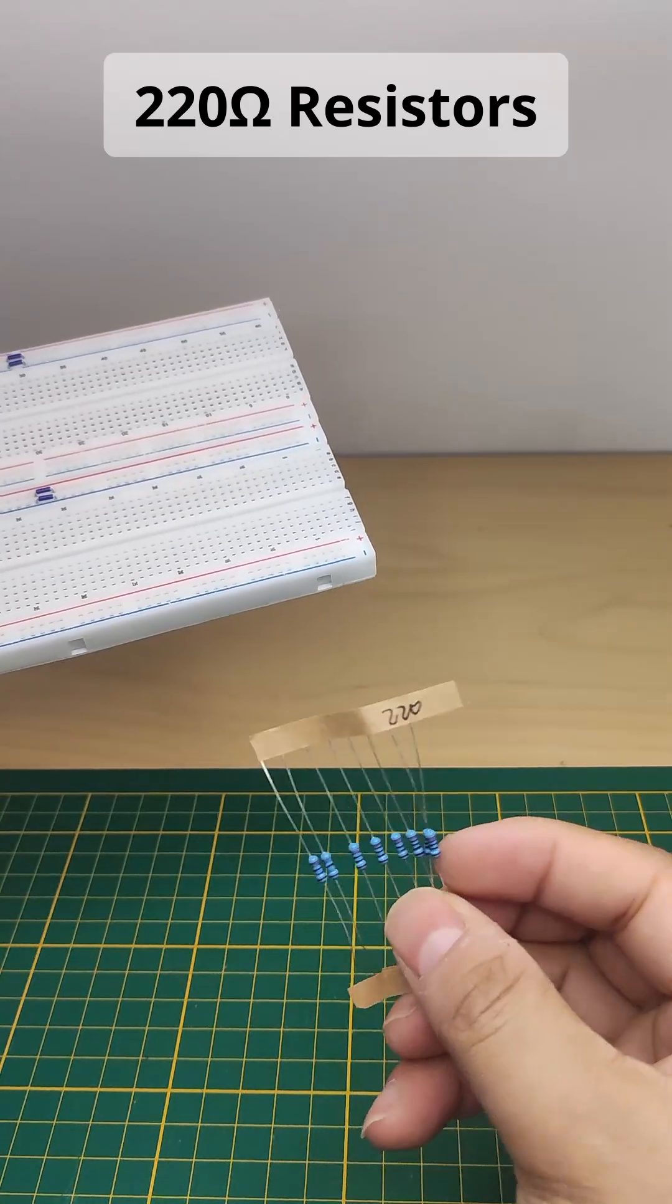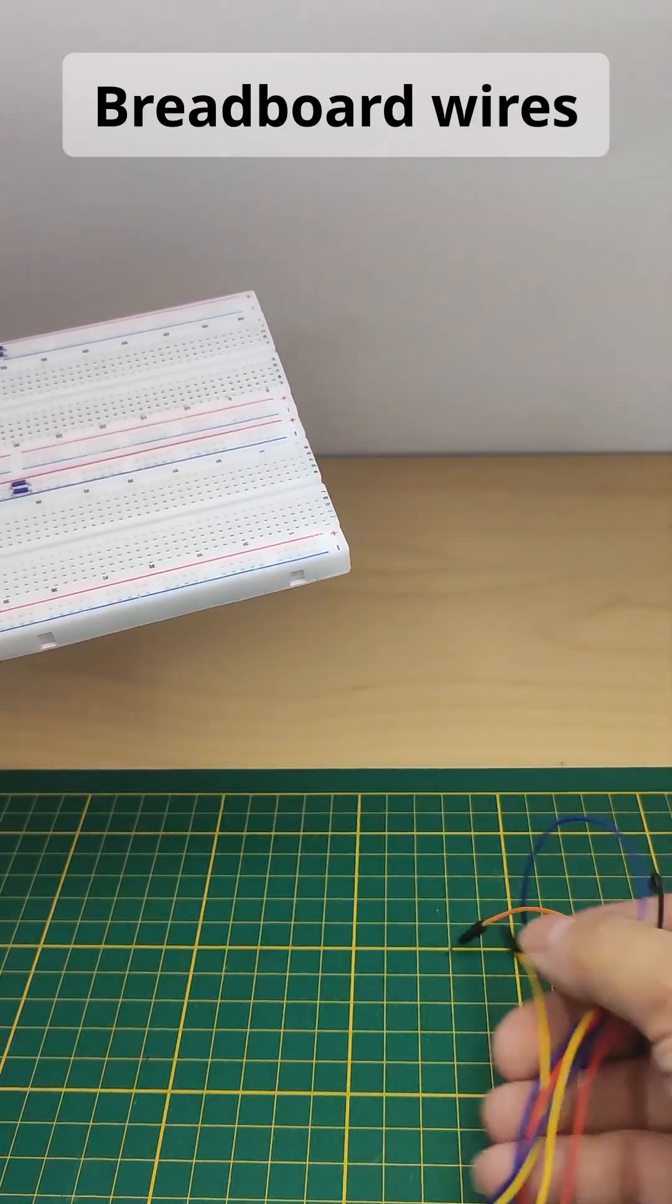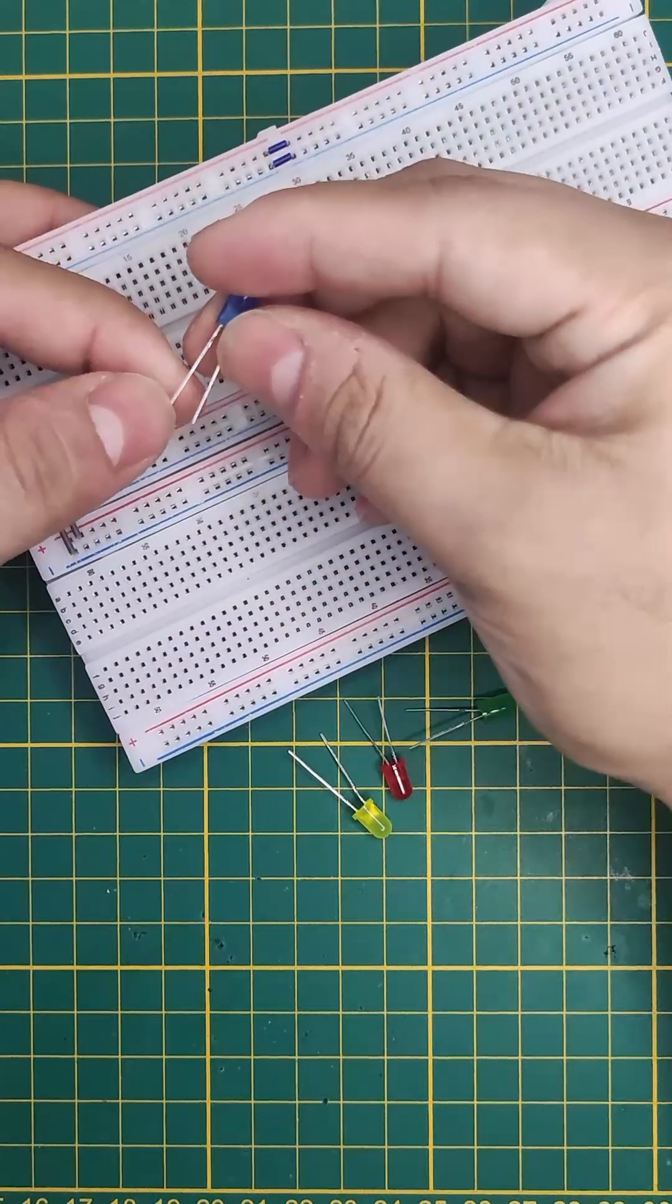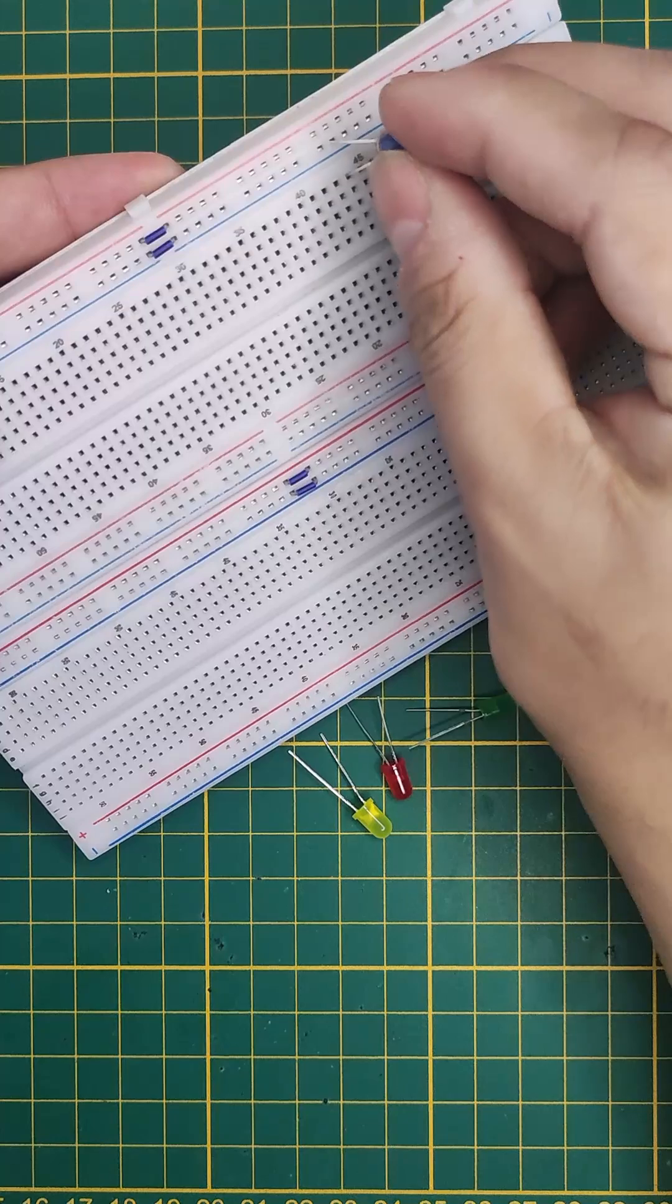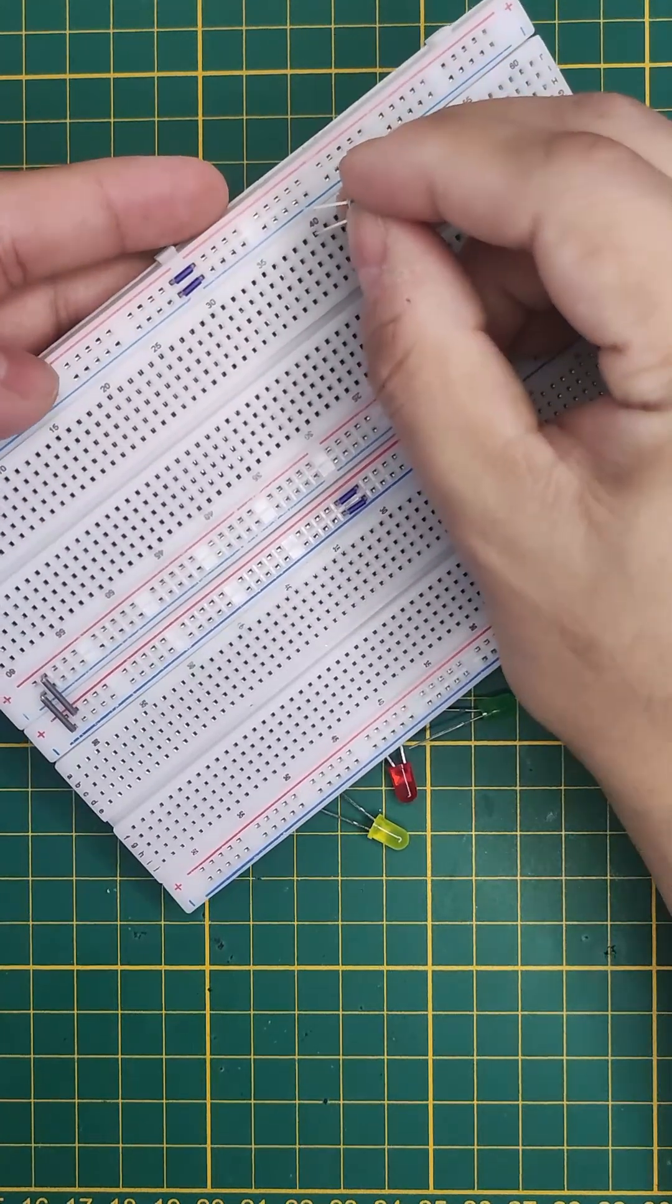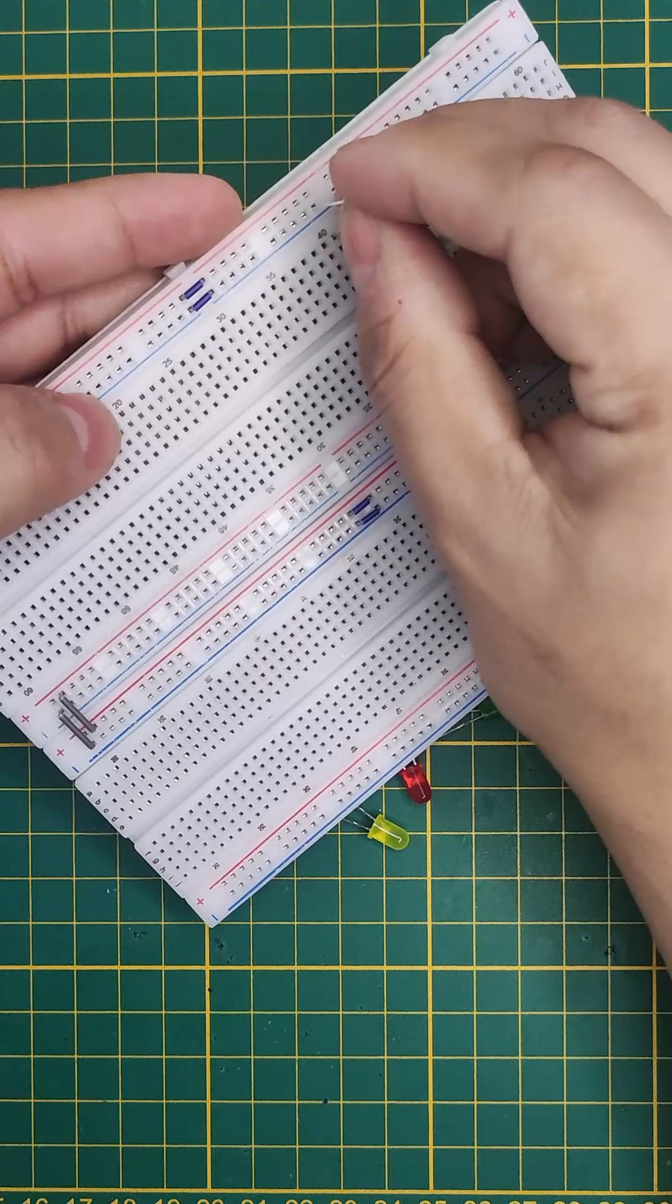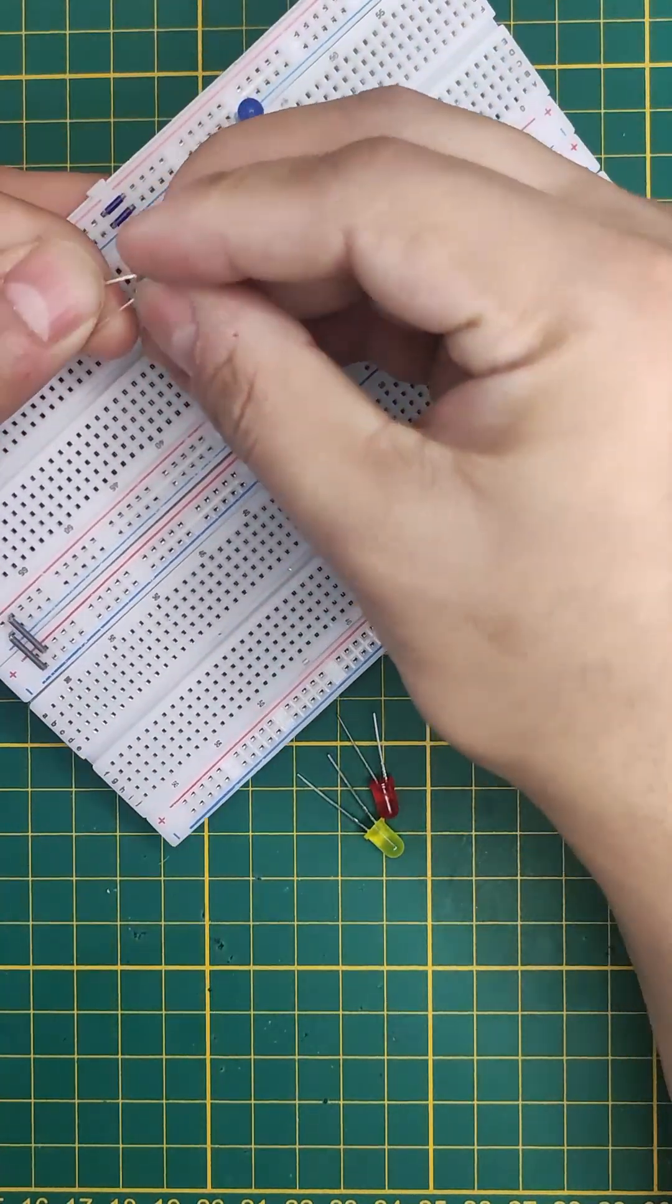You'll also need some resistors, 220 ohms, and some breadboard wires. First we will connect the LEDs. The shorter side is the negative side and the longer is the positive one. This is the shorter one, so we'll connect it to the blue side of the breadboard, and similarly for all the others.